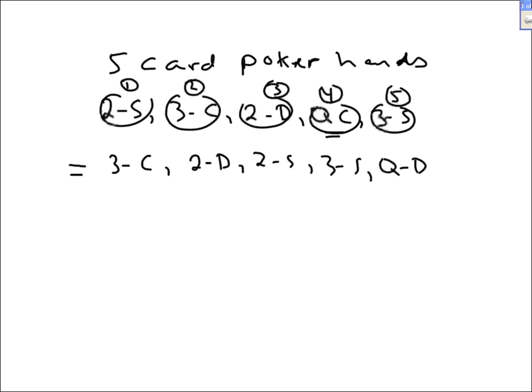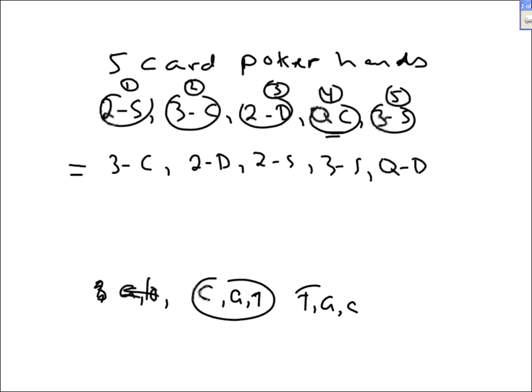That's called a combination. When the order matters, it's called a permutation. Remember, the permutations on the letters CAT — we agreed that CAT and TAC are different. That's a permutation; the order matters. In combinations, the order does not matter. So these two five-card poker hands are the same, so we're going to use combinations.